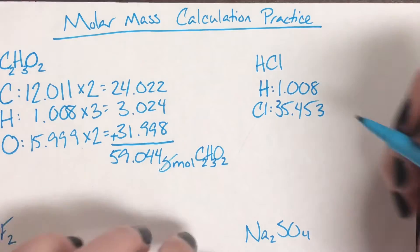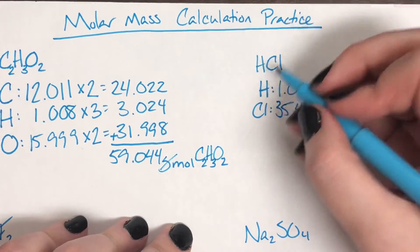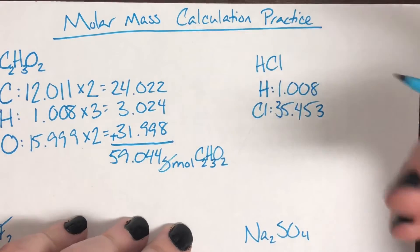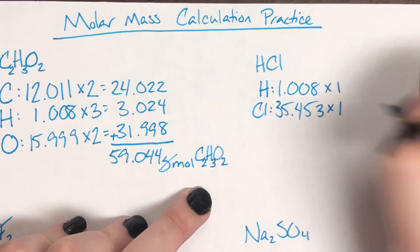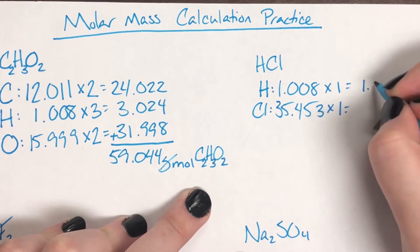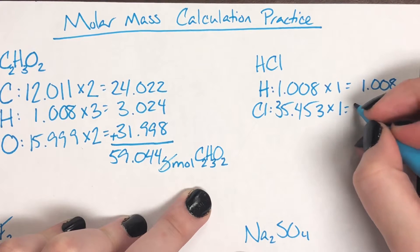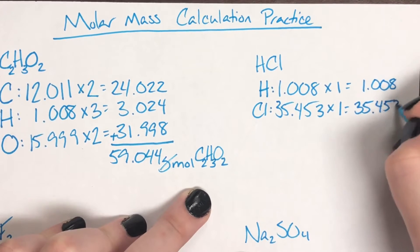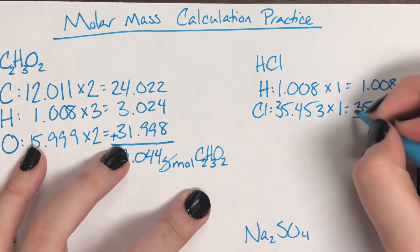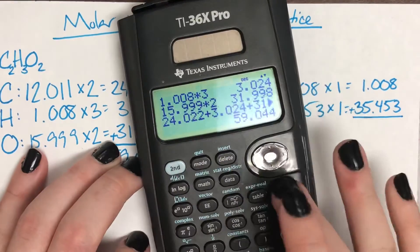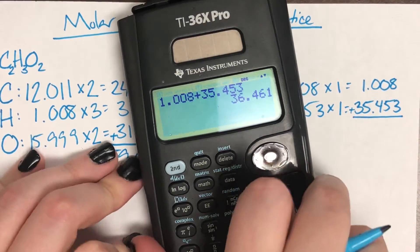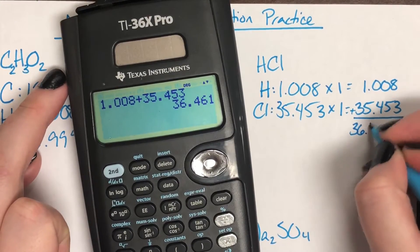Now that we have all our masses written down, we're going to multiply by the number we actually have. Neither hydrogen nor chlorine have subscripts here, and remember that invisible subscripts are just 1s. I'm going to multiply by 1 for both, just so I know I completed all the appropriate steps — even though multiplying by 1 does not change my number. Adding those up: 1.008 plus 35.453 gives me 36.461.